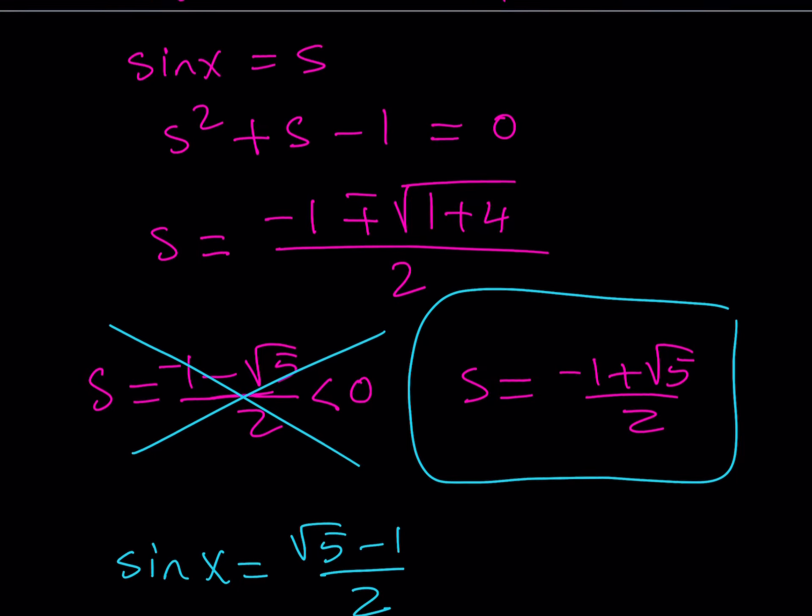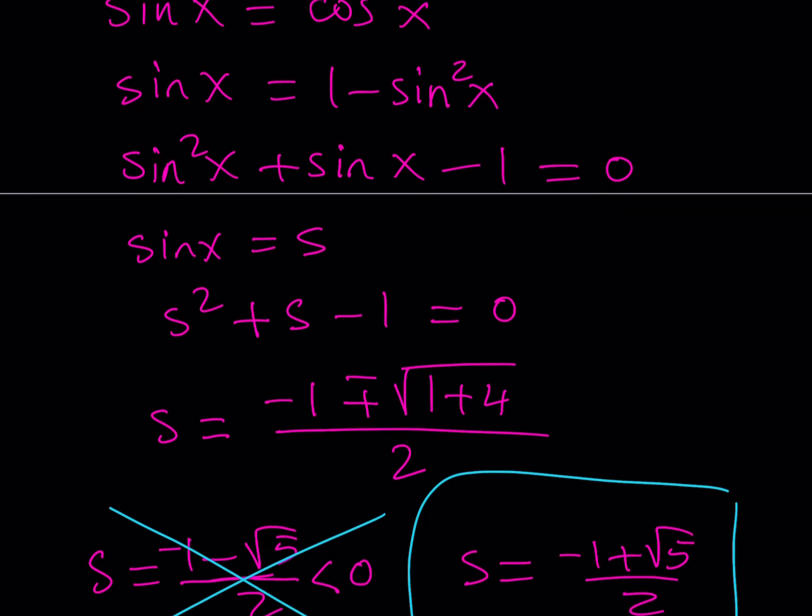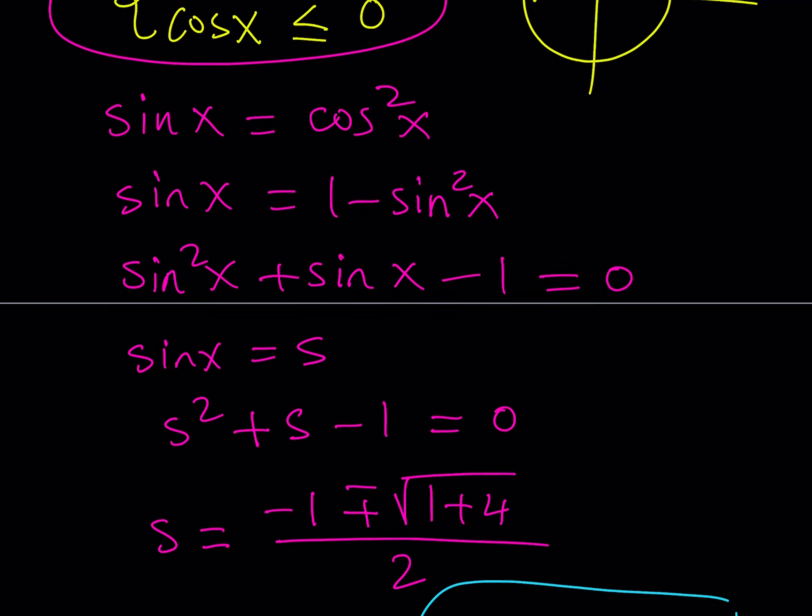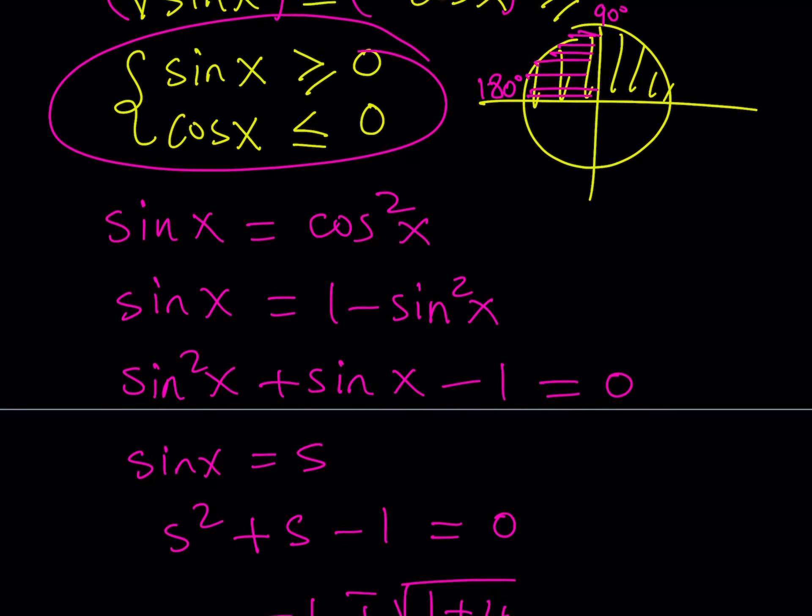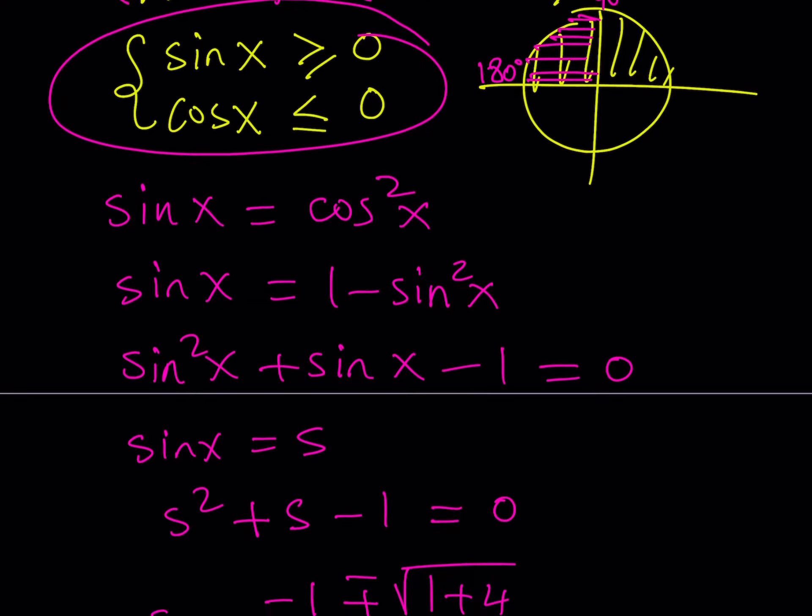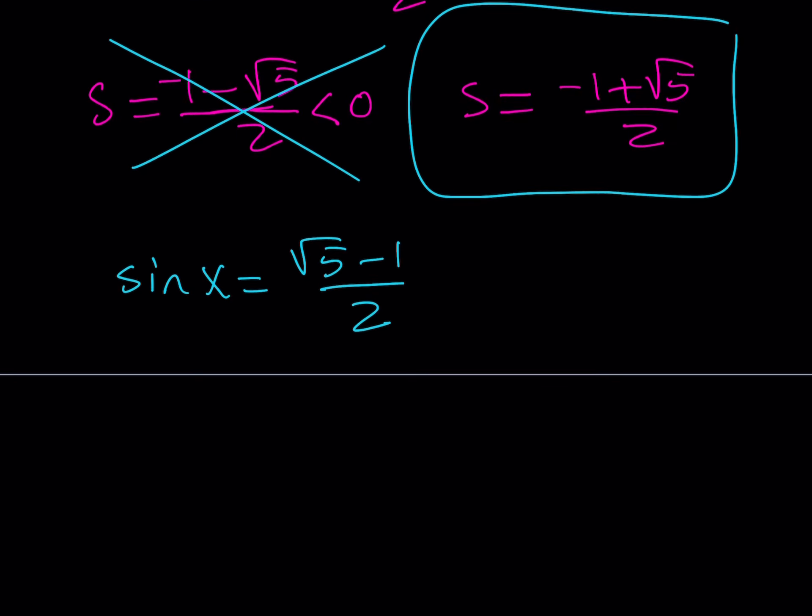But we also have to look at the other criteria that we have. Cosine x needs to be less than or equal to 0 and sine x needs to be greater or equal to 0. In other words we're going to be in the second quadrant.